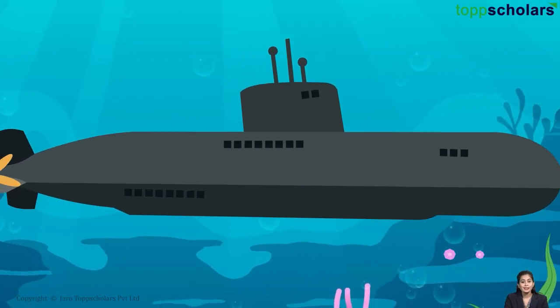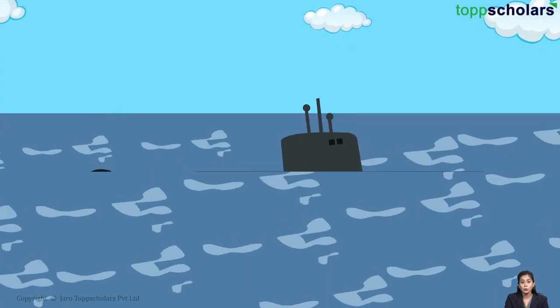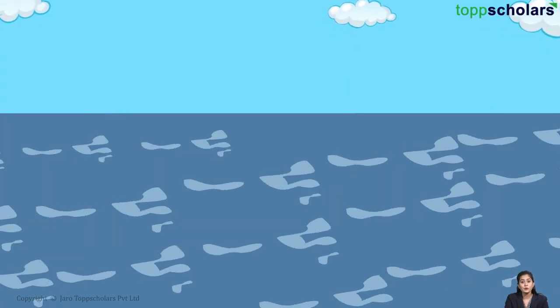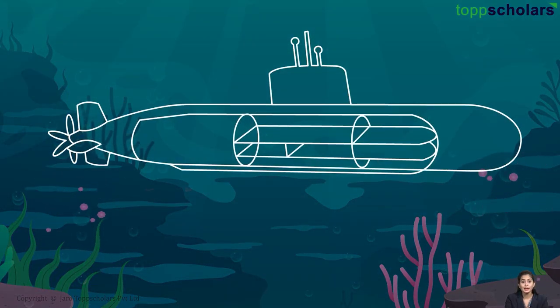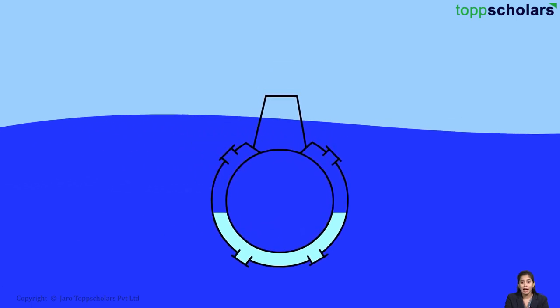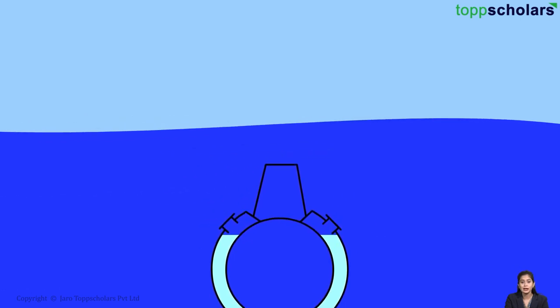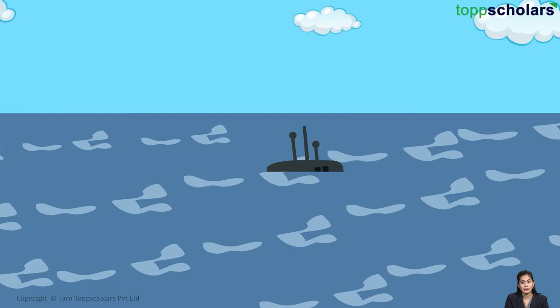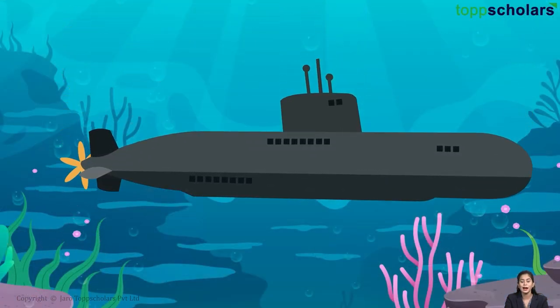Let's have a look at another interesting use of Archimedes' principle. Submarines use the same principle to move up and down in the sea. Inside the submarine, there is a water compartment filled with water. The average density of the submarine is varied by varying the water level in the compartment, which helps the submarine to come up on the surface and dive deep in the sea accordingly. I hope you have understood the concept. Thank you. Happy learning.